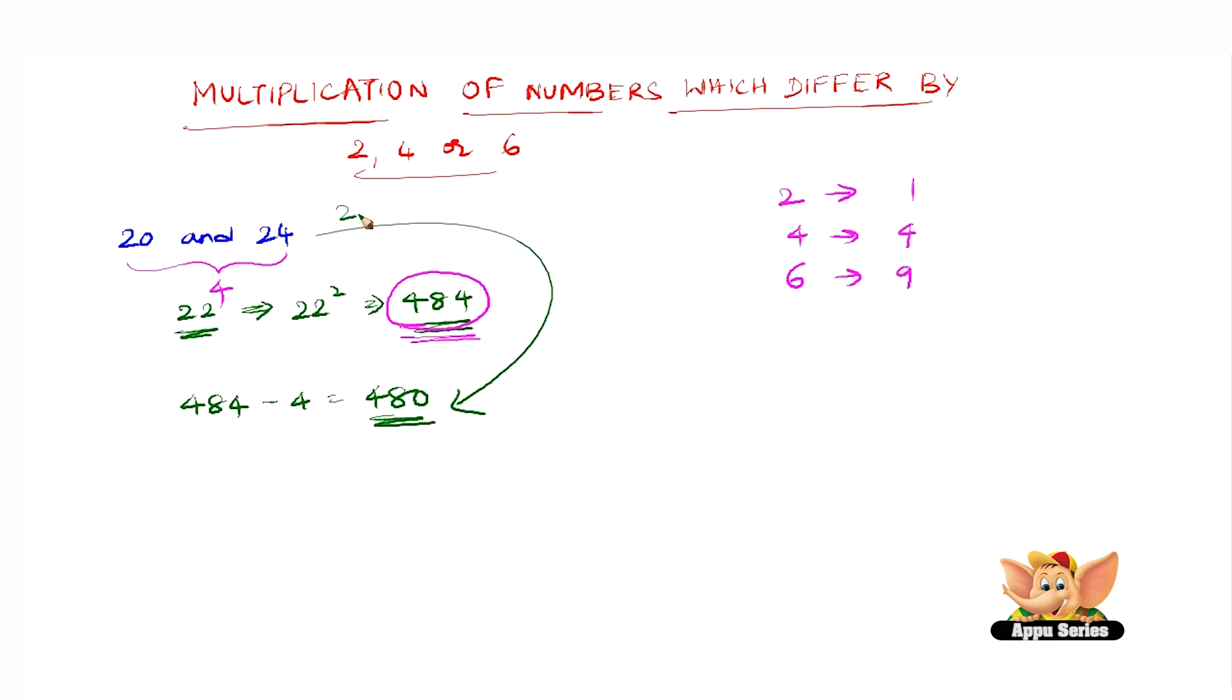So let us quickly take another example. Let us multiply 18 and 22. The number exactly halfway between 18 and 22 is 20. Squaring 20 gives us 400. Now since the difference between 18 and 22 is 4, therefore subtract 4 from 400. So 400 minus 4 is 396. Therefore 396 is the answer of 18 into 22.